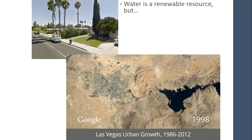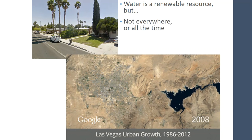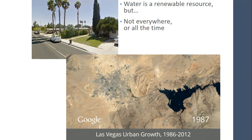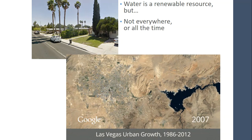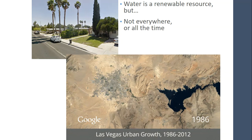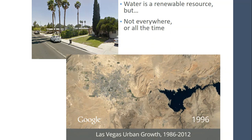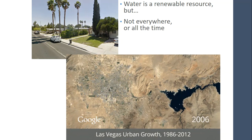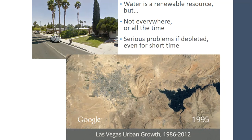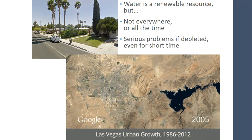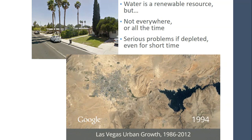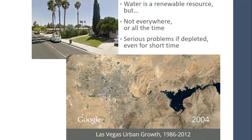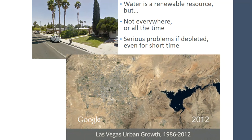Water is a renewable resource, but not everywhere or all the time. Some places are going to have more water than others. Human beings now live just about everywhere and have gotten really good at extracting water, but it might not necessarily be replenishing. It can become a serious problem if it's depleted, even for a short period of time. You can imagine that if the city of Las Vegas started to run out of water, they're going to have to get water from someplace else.